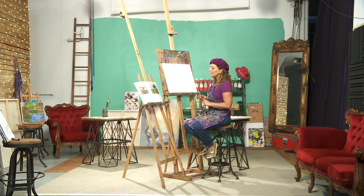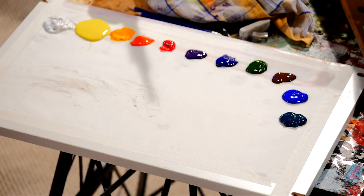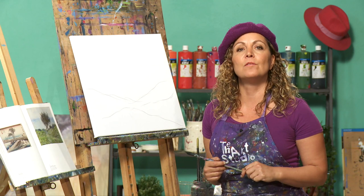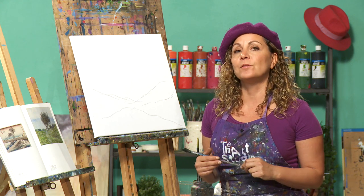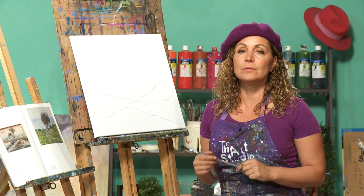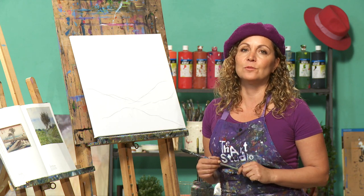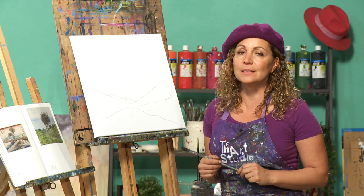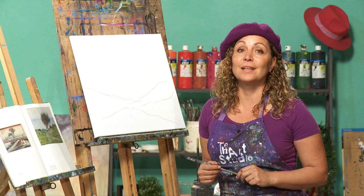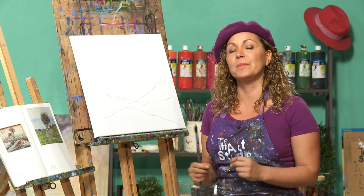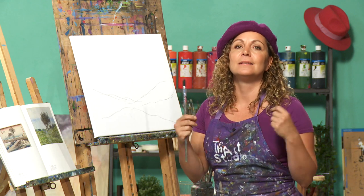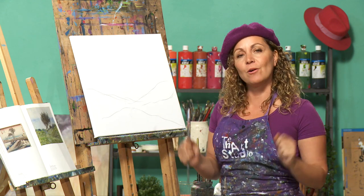What I'm using today is acrylic paint by Derivan Matisse, an Australian brand. They're from the professional series and I would really recommend, if you want to get into painting and mixing, to use professional type of paints because they have the real pigments in them. And when we start mixing, this is what matters.